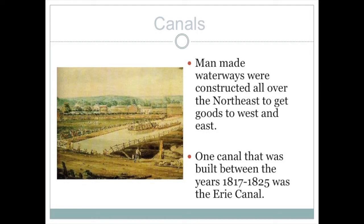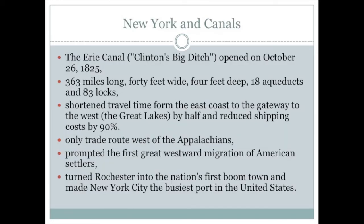Because of easy transportation, cities would spring up along the canal routes. The Erie Canal, originally called Clinton's Big Ditch after the governor of New York, was 363 miles long, 40 feet wide, 4 feet deep, with 18 aqueducts and 83 locks to move up and down the hills. It reduced travel time between the Great Lakes and the East Coast by up to 90%, prompted westward migration, turned Rochester into the nation's first boom town, and made New York City the busiest port in the United States.